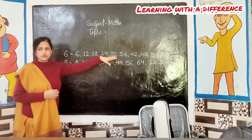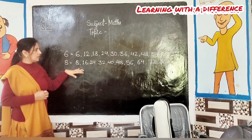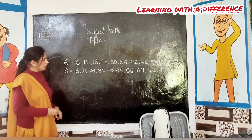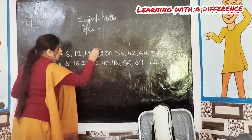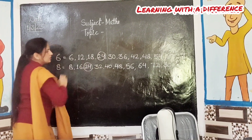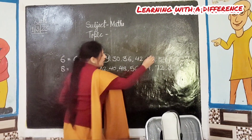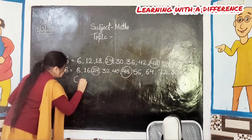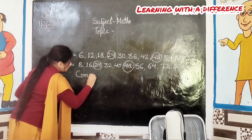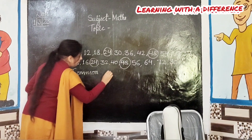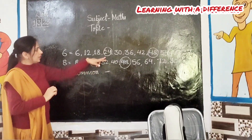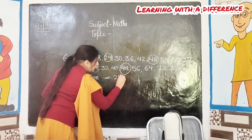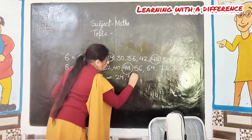What are the common numbers? 24. Very good. And 48. Exactly. So, common numbers — speak one more time — common numbers are 24 and 48.